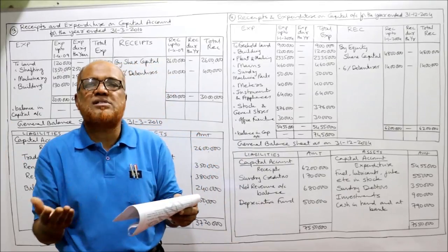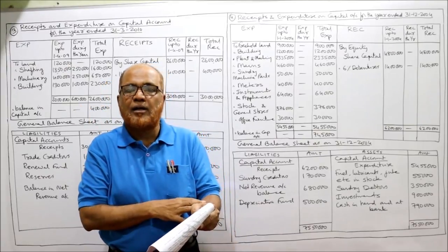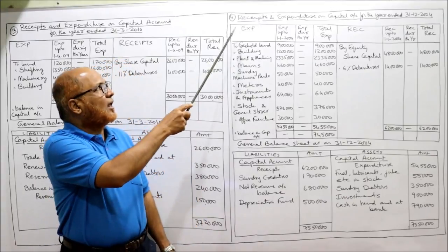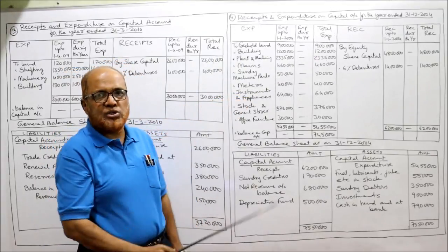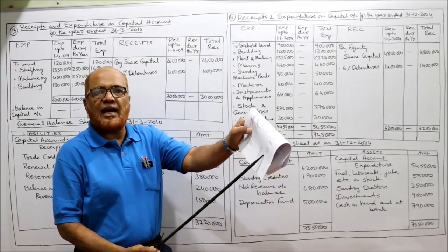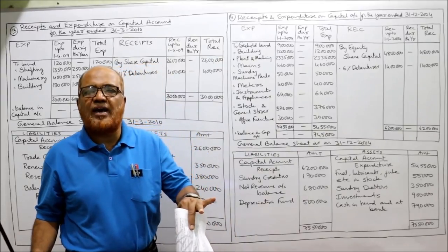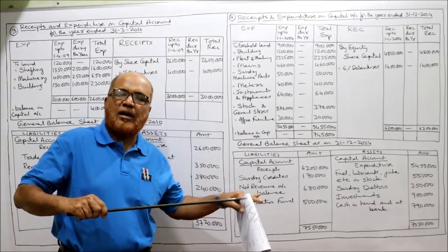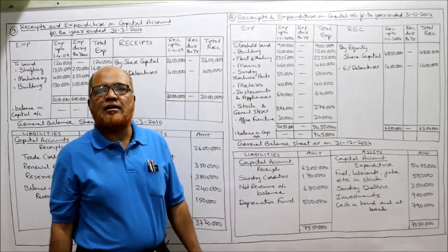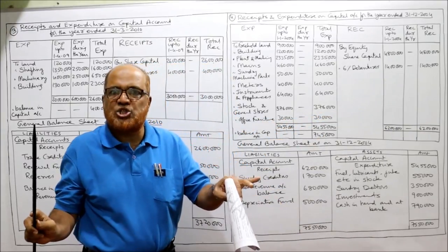Issued and paid-up capital: 6,000 equity shares of rupees 1,000 each, rupees 800 per share paid up — 6,000 into 800 equals 48 lakh rupees paid-up capital. In the receipts and expenditure on capital account for 31st December 2004, the receipts side shows equity share capital 48 lakh at the beginning of the year; no shares were issued during the year, so total remains 48 lakh. Next: 6% debentures 14 lakh — also fixed capital — 14 lakh at the beginning, nil during the year, total 14 lakh.